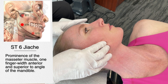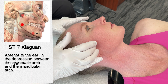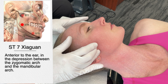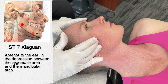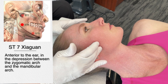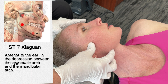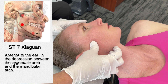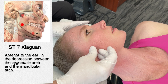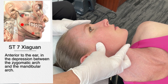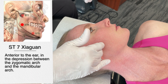Moving just forward from here is Stomach 7, anterior to the ear in the depression between the zygomatic arch and the mandibular arch. They also use this for facial paralysis, TMJ disorders, and toothache. In traditional Chinese medicine they would also use this for tinnitus. When I get in and really work this point you feel it way more than with a light touch — and when I'm getting on these areas, I'm actually tapping into the entire fascial expansion between the temporalis muscle, the occipital-frontalis, and right up near the front around the eye. There's such a high density of neurological receptors throughout this plane.